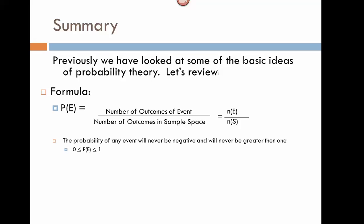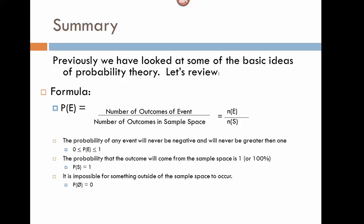We also saw that the probability of any event is never negative, never greater than one — so never less than 0% and never greater than 100%. The probability that any outcome will come from the sample space is 100%, meaning P(S) equals 1, and the probability that it would come from outside the sample space is 0.